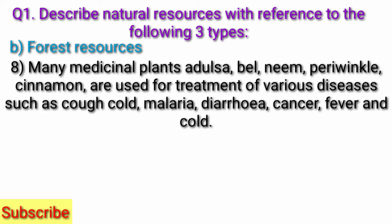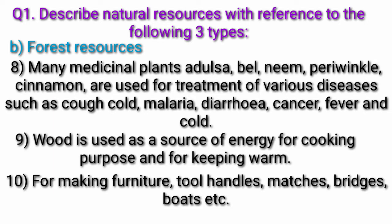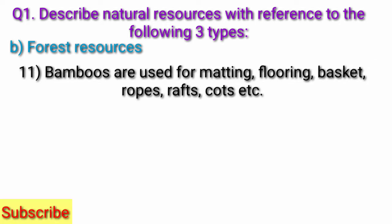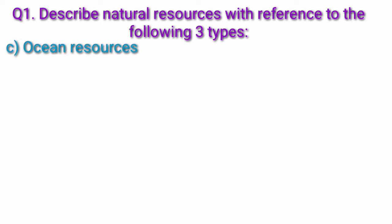Many medicinal plants like adulsa, bell, neem, periwinkle, and cinnamon are used for treatment of various diseases such as cough, cold, malaria, diarrhea, cancer, and fever. Wood is used as a source of energy for cooking and for keeping warm, for making furniture, tool handles, matches, bridges, and ports. Bamboos are used for matting, flooring, baskets, ropes, rafts, and cots.